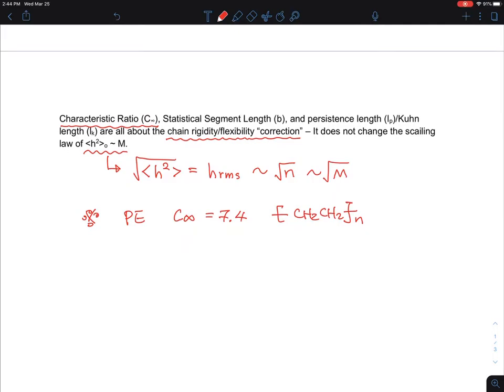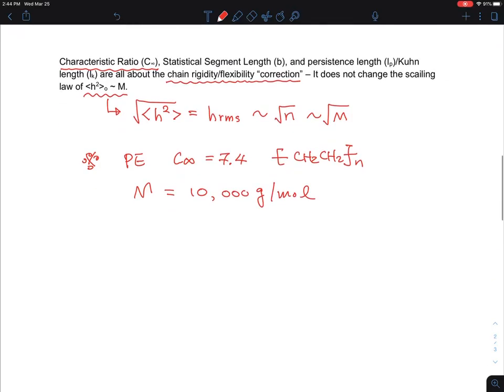So therefore, what I can do now is I need to calculate for a given molecular weight, let's say like we did before, 10,000 grams per mole. And what I can do now is for 10,000 grams per mole, M over M₀, which is the degree of polymerization, that's 10,000 divided by 28 grams per mole, that's 358 repeating units. And therefore, the number of bonds for me to use a characteristic ratio value is 2 times the DP. That's 716 bonds.